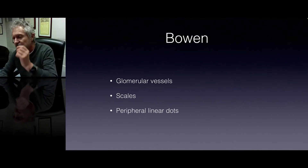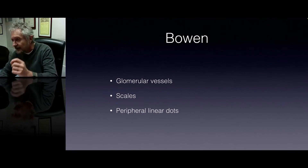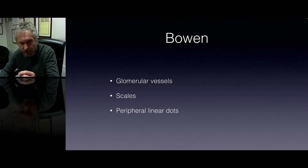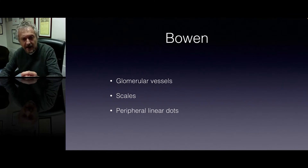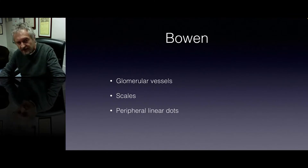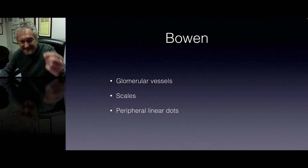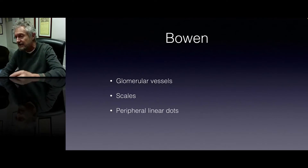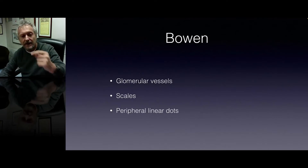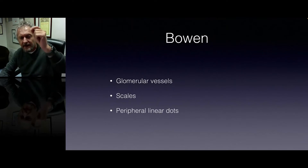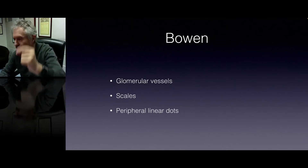A very unique type of carcinoma in situ is Bowen's disease, which is typified dermoscopically by glomerular vessels, scales, and if pigmented, you can see the pigmentation as peripheral linear dots.